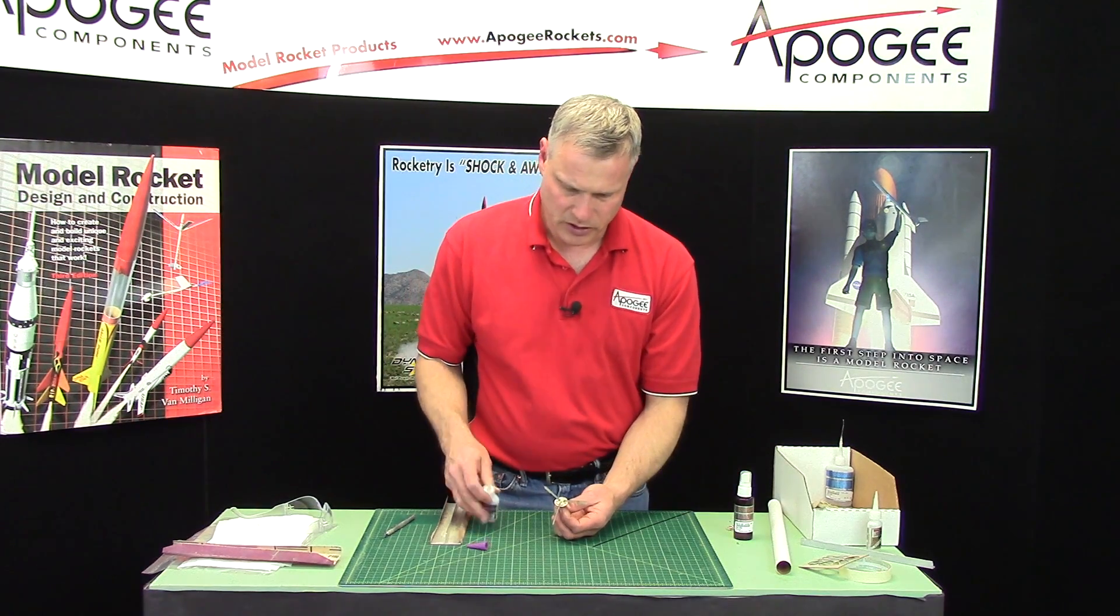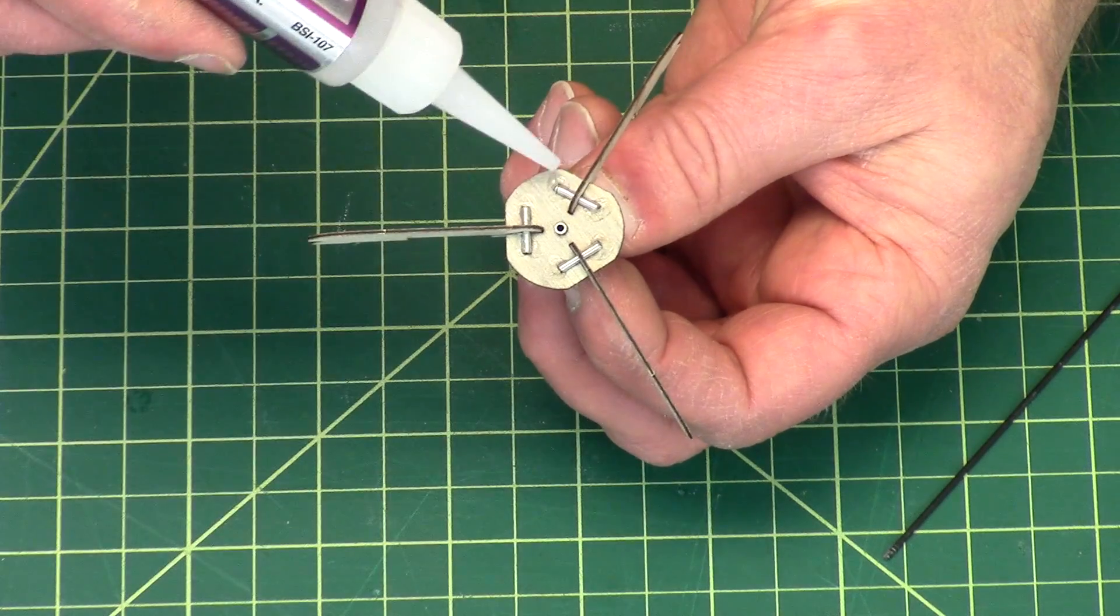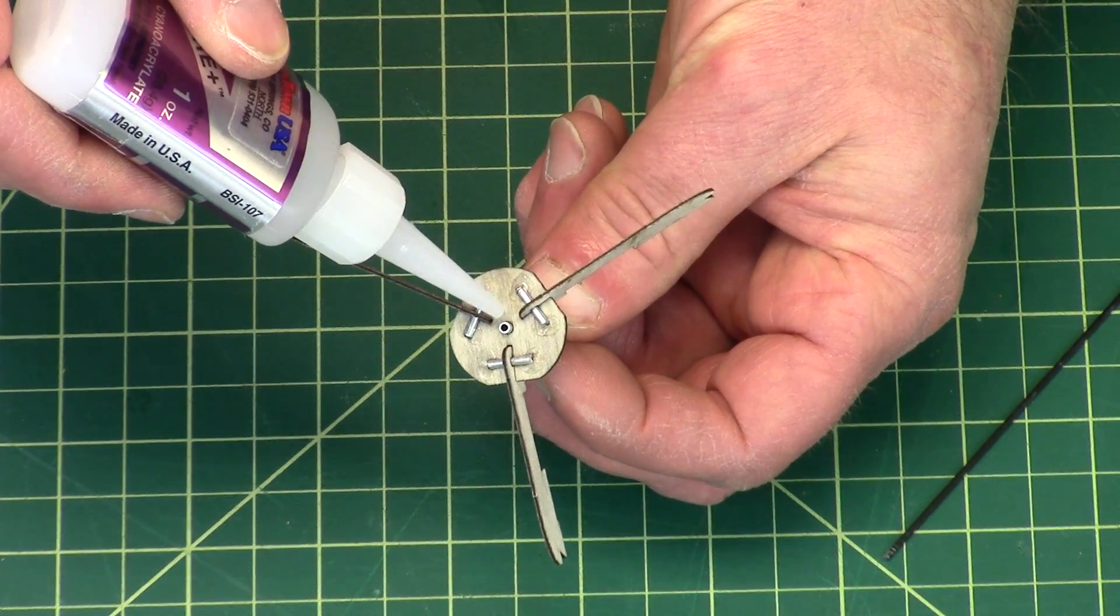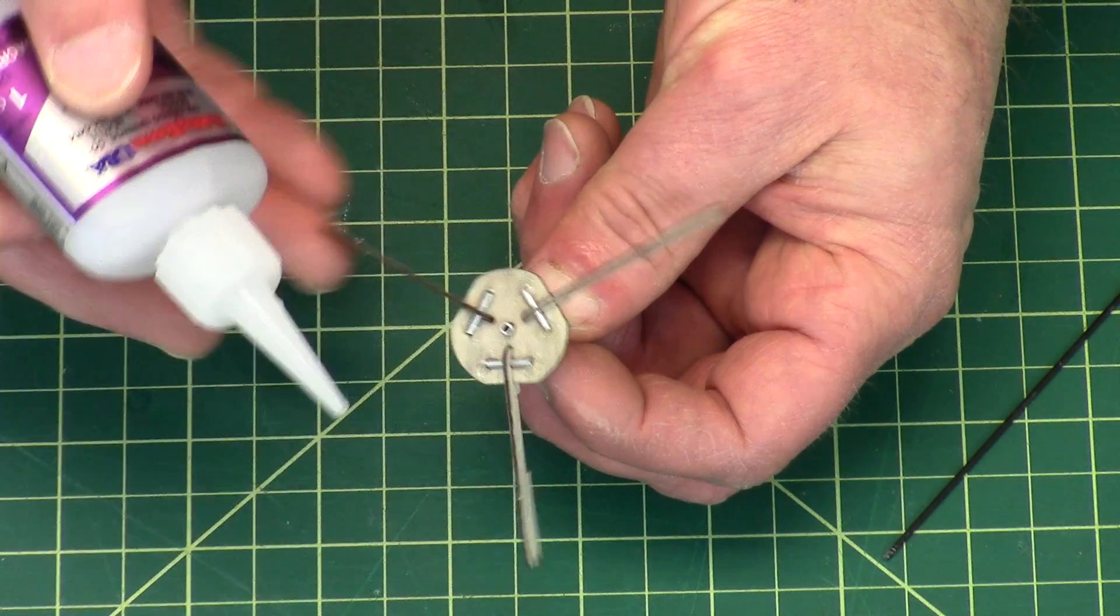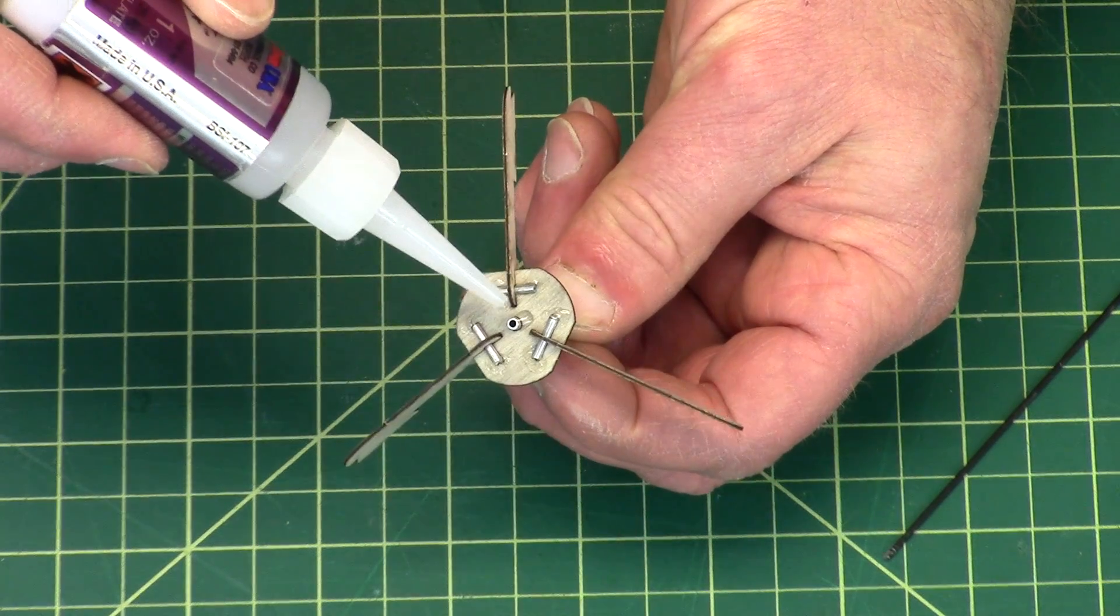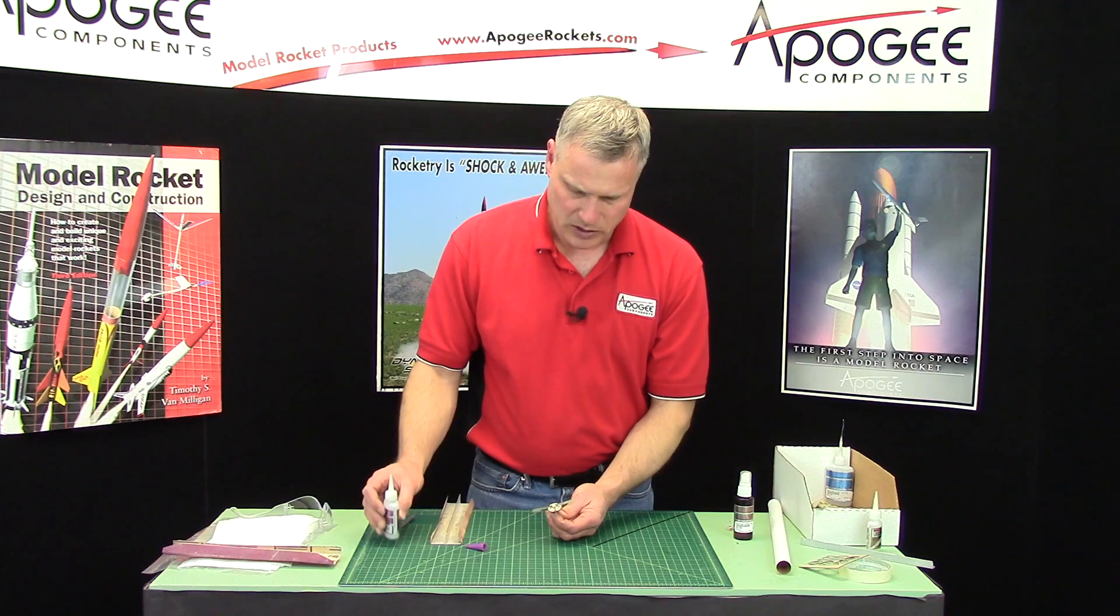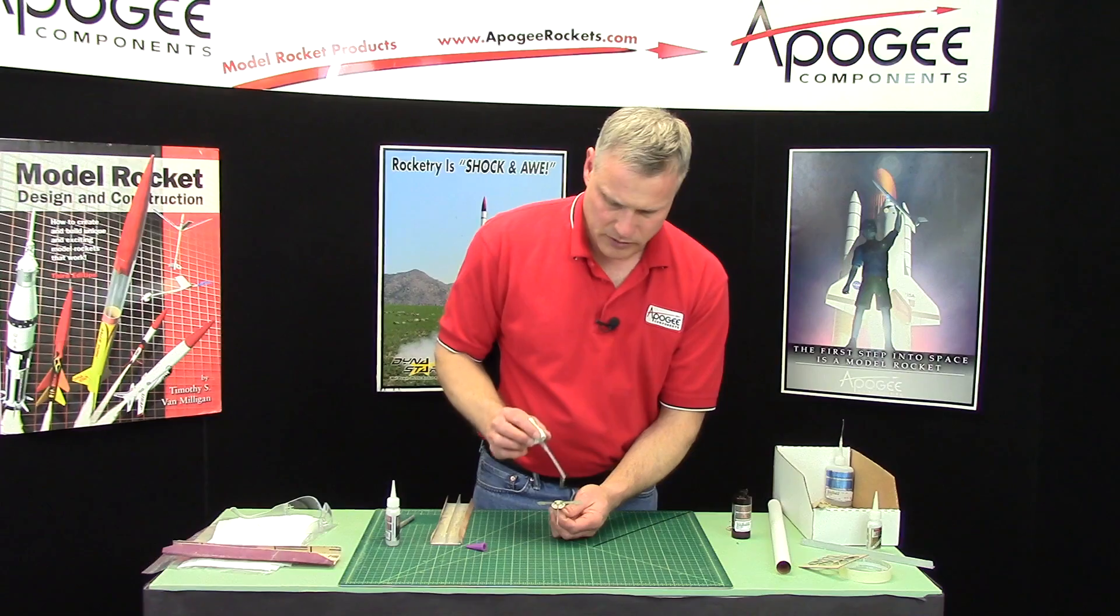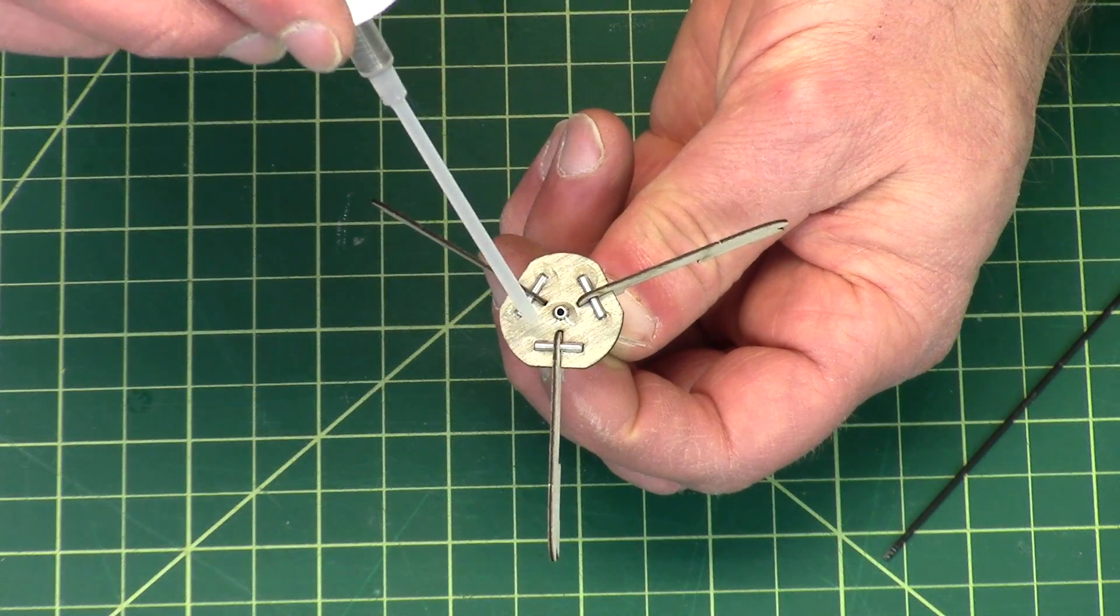And I'm using some thick CA glue. And I'm doing it on the bottom side, because I don't want any glue getting anywhere close to where those pins rotate. And I'm just going to put a drop of accelerator on there.